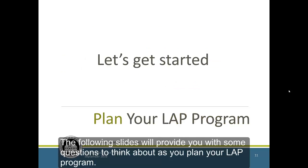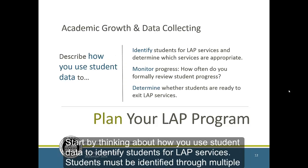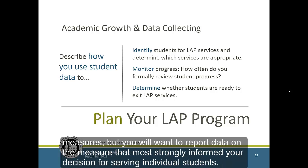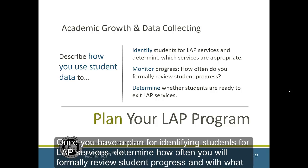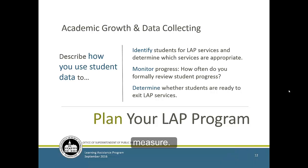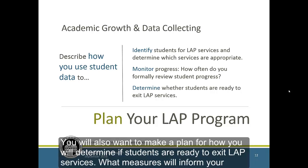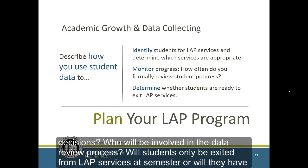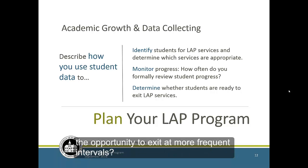The following slides will provide some questions to think about as you plan your LAP program. Start by thinking about how you use student data to identify students for LAP services. Students must be identified through multiple measures, but you will want to report data on the measure that most strongly informed your decision for serving individual students. Once you have a plan for identifying students, determine how often you will formally review student progress and with what measure. Make a plan for how you will determine if students are ready to exit LAP services. What measures will inform your decisions? Who will be involved in the data review process? Will students only be exited at semester or will they have the opportunity to exit at more frequent intervals?